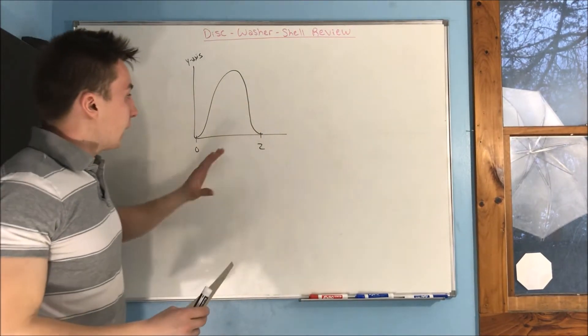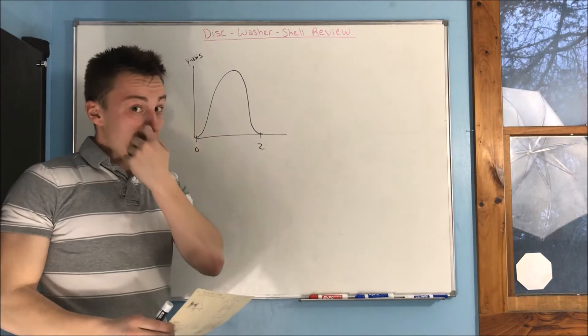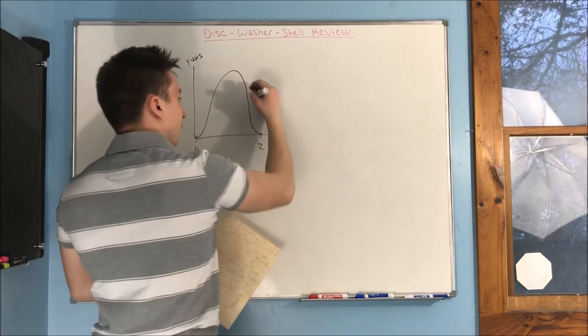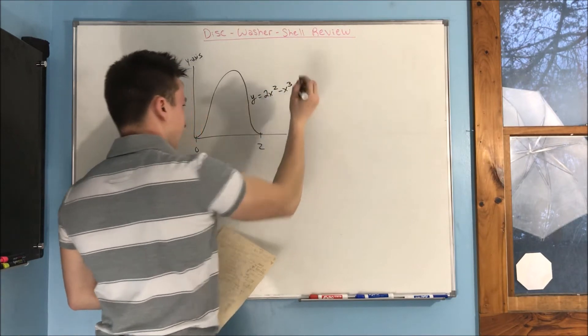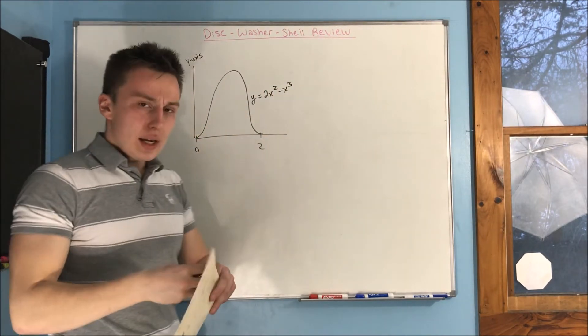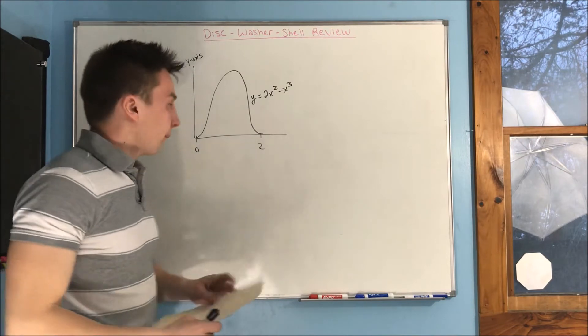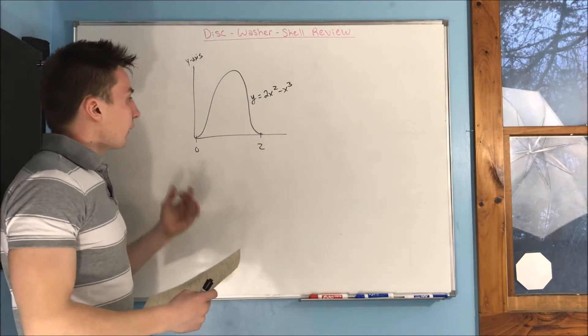Now, here is an example of when we would need to use shell method. We have a graph here, this is the graph of y equals 2x squared minus x cubed. And this is the graph that I showed in the original shell method video.